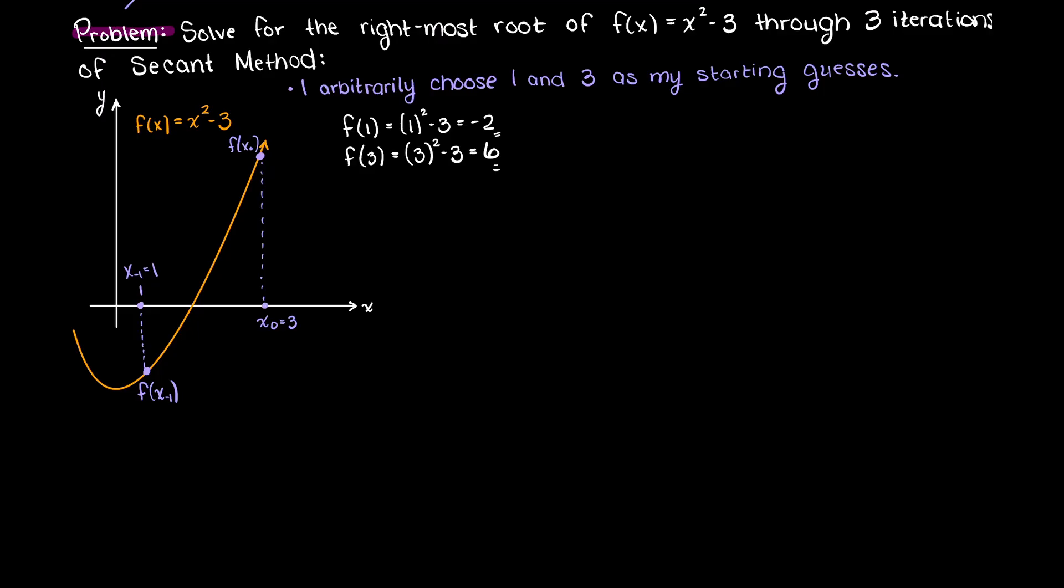To keep track of our iterations, let's create a simple table here with our number of iterations, the x values, and the evaluated functions at each of those x values. So let's go ahead and fill in that table now for all the values that we have so far.